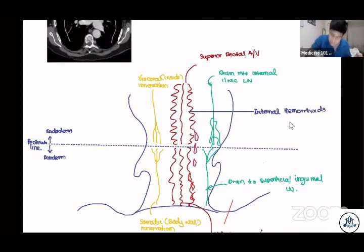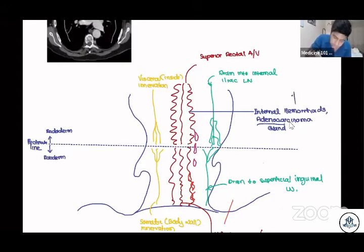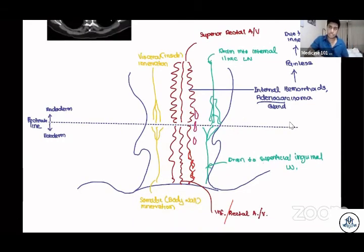Internal hemorrhoids occur above the pectinate line and are also associated with adenocarcinoma in that region. Adeno means gland, carcinoma is a malignant tumor — cancers originating from glands. Internal hemorrhoids: are they painful or painless? They are painless.